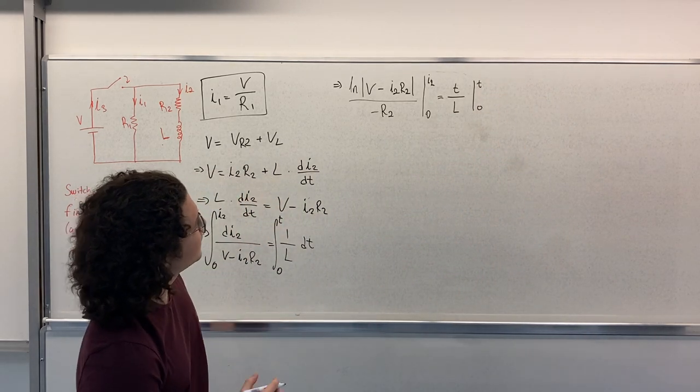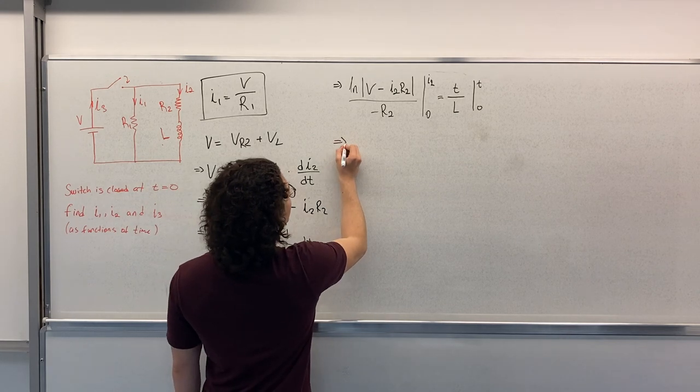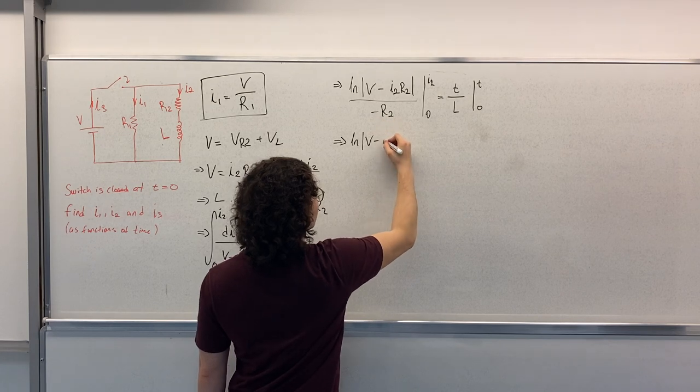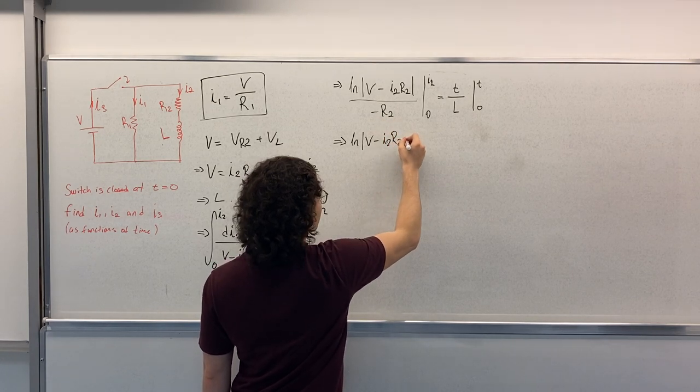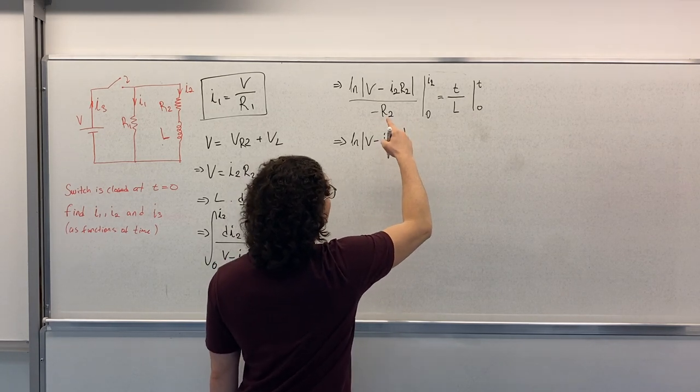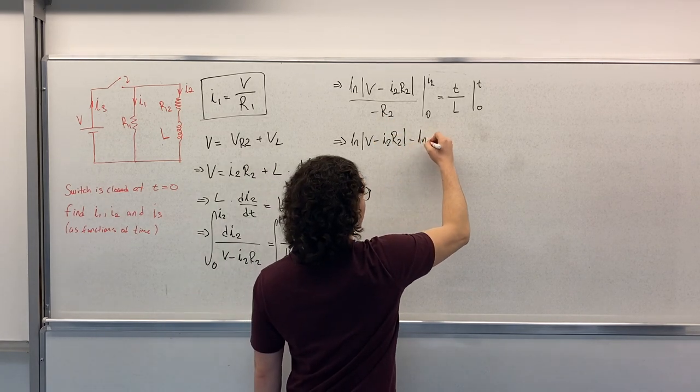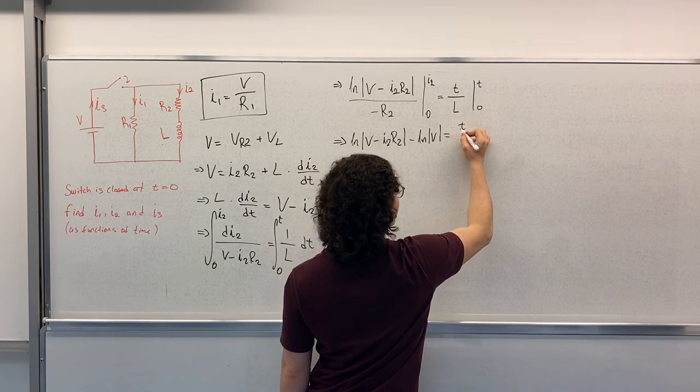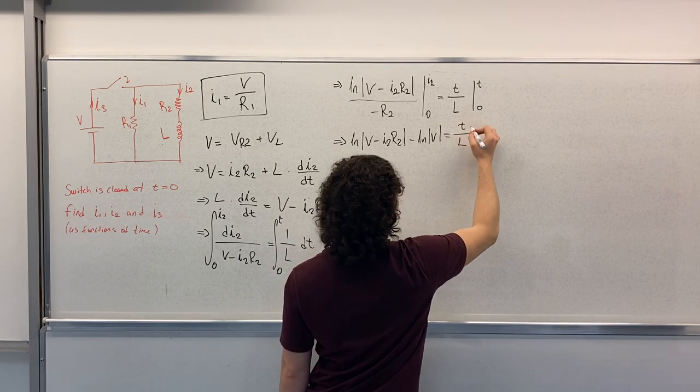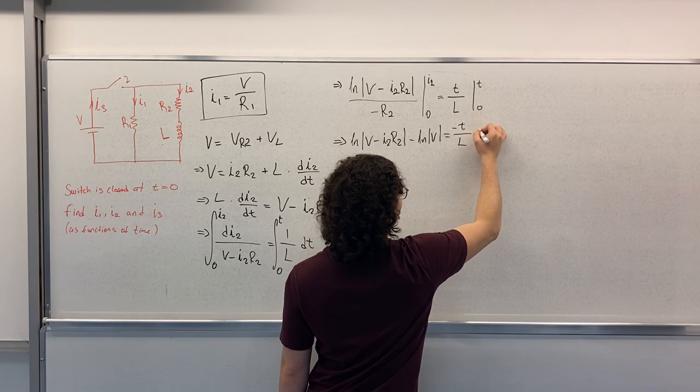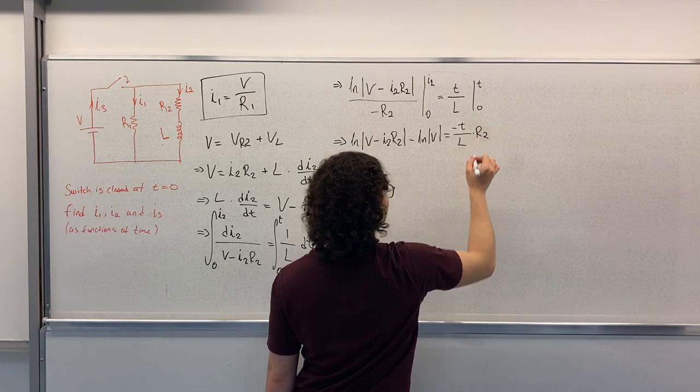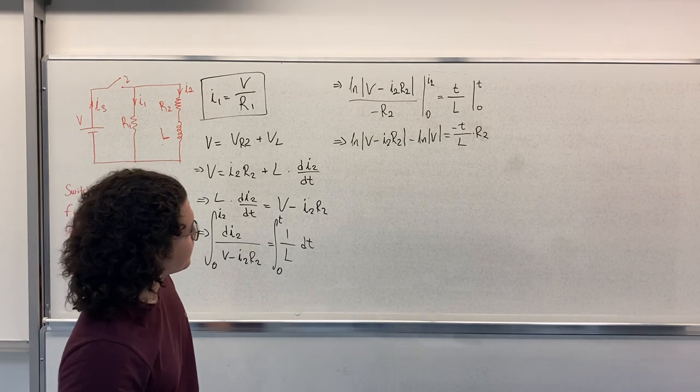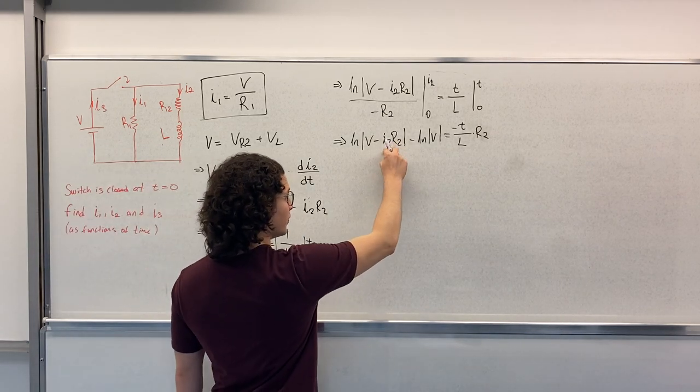So if we continue, we will obtain Lm V minus I2 R2 minus Lm V is equal to T over L times minus R2 plus Lm V. So now we will find I2.